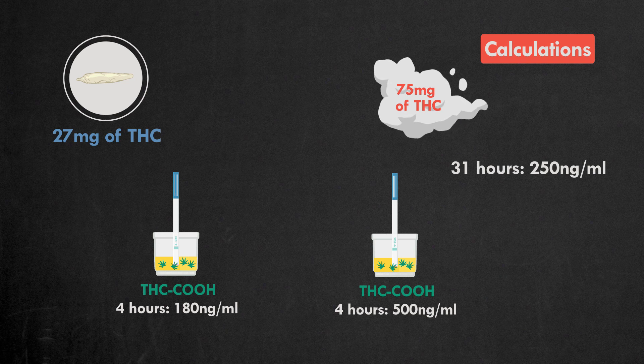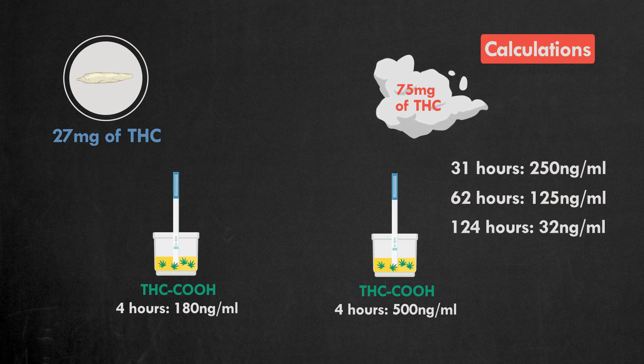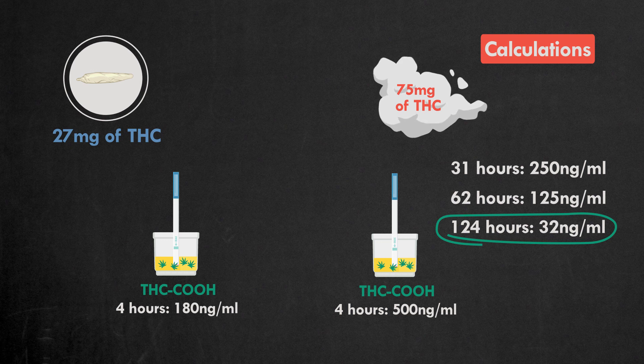After 31 hours, the concentration will be 250 ng per ml. After 62 hours, it will be 125 ng per ml. The concentration will drop to 32 ng per ml after 124 hours. This concentration of THC is below the 50 ng per ml cutoff of the urine drug test.